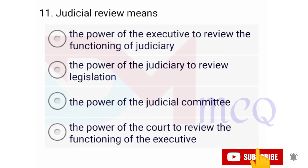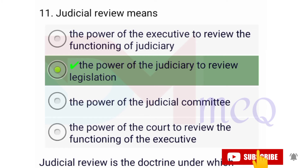Question number eleven: Judicial review means — correct option is the power of judiciary to review legislation. Yes friends, judicial review is the doctrine under which legislative and executive actions are subject to review by the judiciary. A court with judicial review power may invalidate laws and decisions that are incompatible with a higher authority, such as the terms of a written constitution.